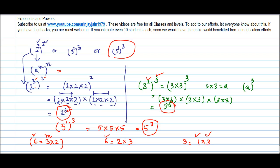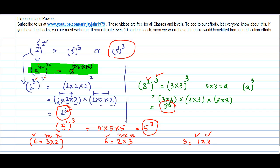We can write the general form as: a to the power m, all to the power n. Here three was m and two was n, or two was m and three was n. This gives us the rule of powers: when you raise a number to a power m, and then raise that entire result to a further power n, the result equals a to the power m times n. The final power is the product of the two individual powers.